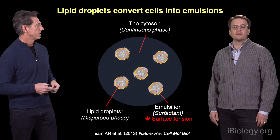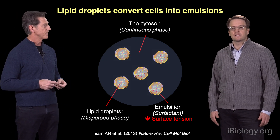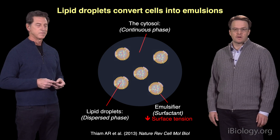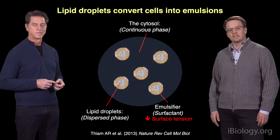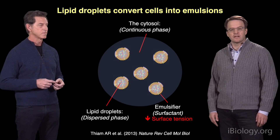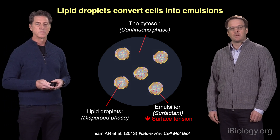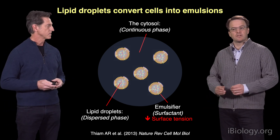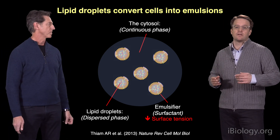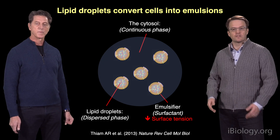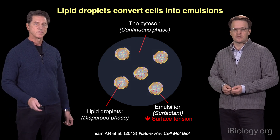The presence of lipid droplets converts cells to emulsions. An emulsion is a system where more than one phase is present at the same time. In this case, the cell becomes an emulsion because lipid droplets form a dispersed phase in the continuous phase of the cytosol. Because such a system is always metastable and there's a tendency for both phases to separate, an emulsifier or surfactant is required to lower the surface tension and prevent all the droplets from coalescing together.